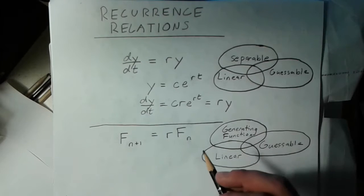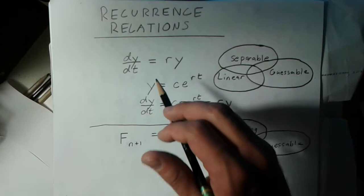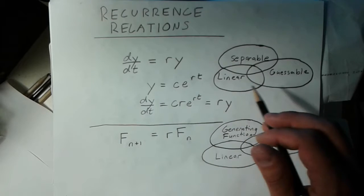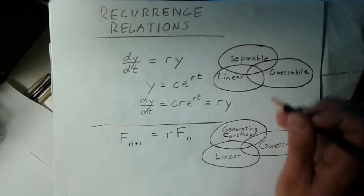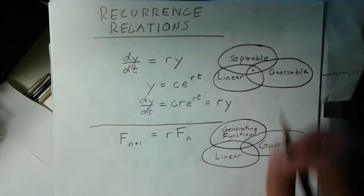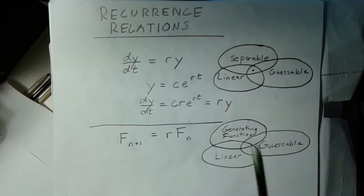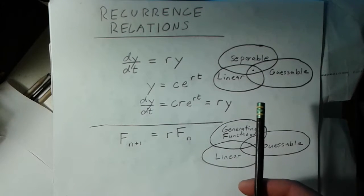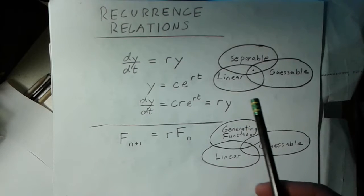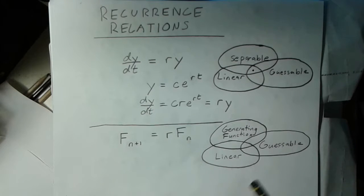So the point is if we were going to map this differential equation on this Venn diagram, this would be all three of these different types. Of course there's actually more ways to solve this. You can use the Laplace transform. You can actually convert it to a recurrence relation, solve the recurrence relation and go back, which is one of the things that I'll be demonstrating later in this series.